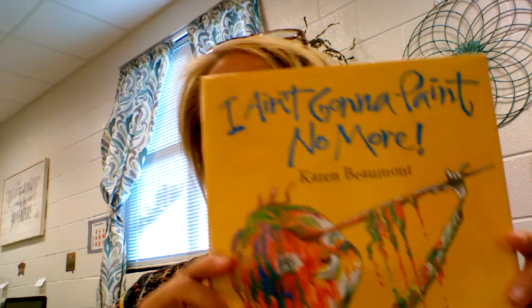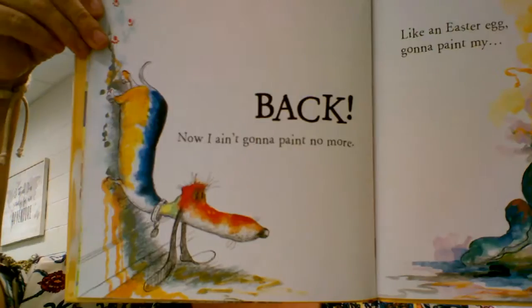This is an activity to go with the book that we read, I Ain't Gonna Paint No More. You remember in the story, he painted all kinds of body parts. He painted his leg. He painted his back.